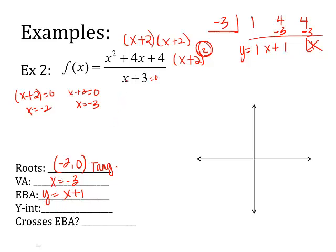Y intercept. Put in a 0 everywhere there's an x. So 0 squared plus 4 times 0 is 0 plus 4 over 0 plus 3. So that's 4/3, 1 and 1/3. So it's (0, 4/3). Now I have to decide, does this cross the end-behavior asymptote? Well, we're not going to mess with this because it's an oblique. For now, oblique asymptotes, we're not going to mess with crossing that. So don't worry about that for now. I'm not going to give you any that do for the sake of simplicity.